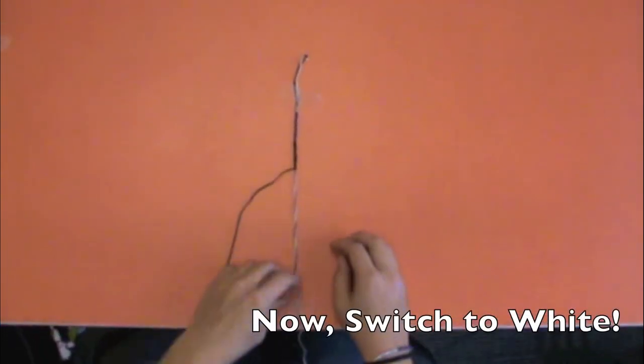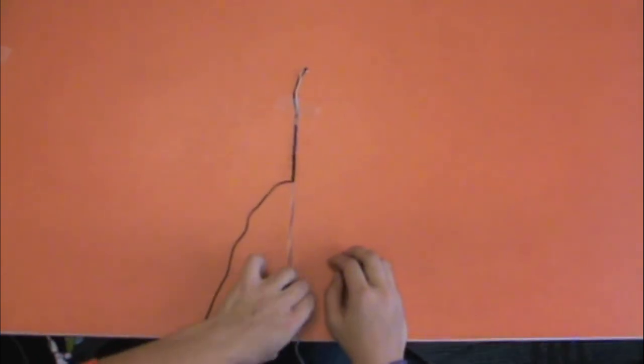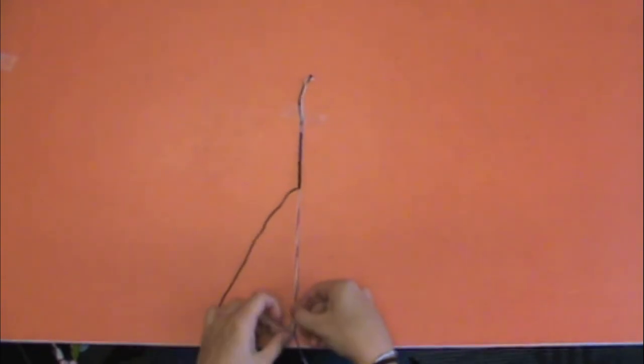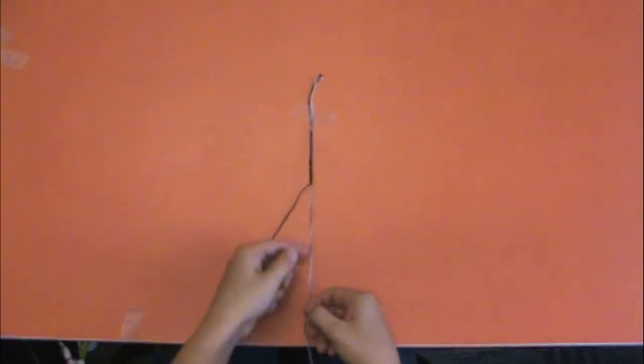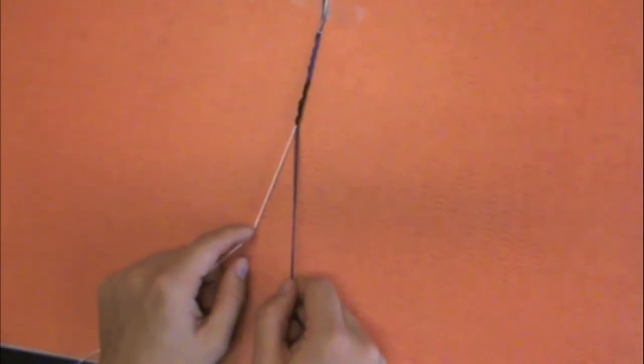Now, after you have the black as long as you want it, you're going to switch to the next color. You're going to lift up the tape and take out the white. Now, take the white and pull it to the left and take your blue and black string and tape it to the table.